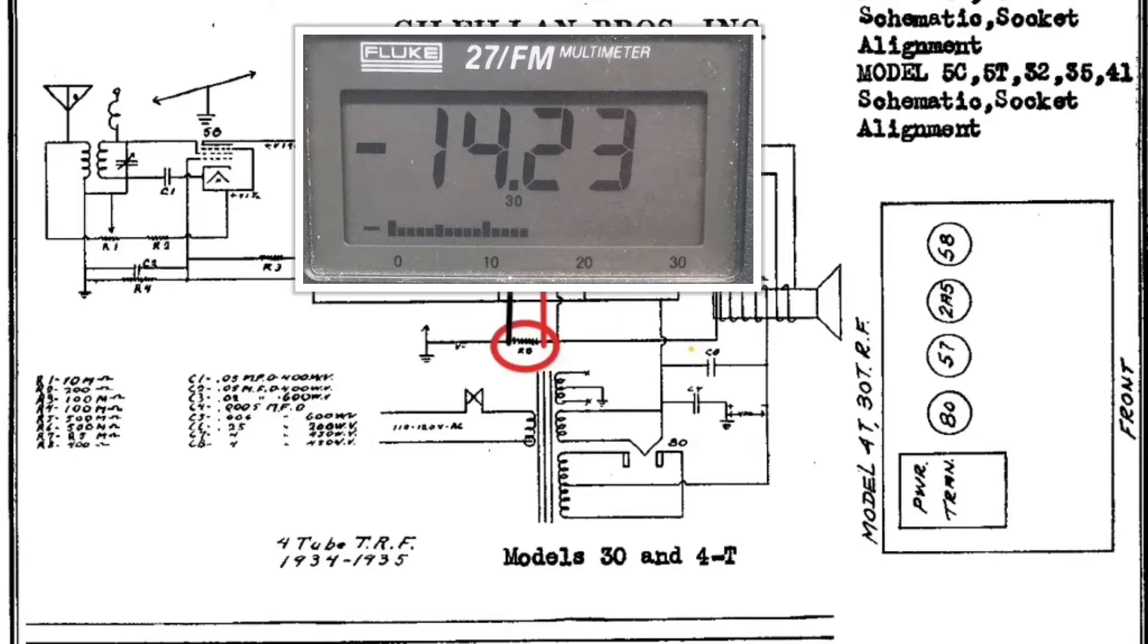That's the B minus side of the power supply, and this all ties back if you follow it back over to that center tab of the power transformer that we talked about earlier.